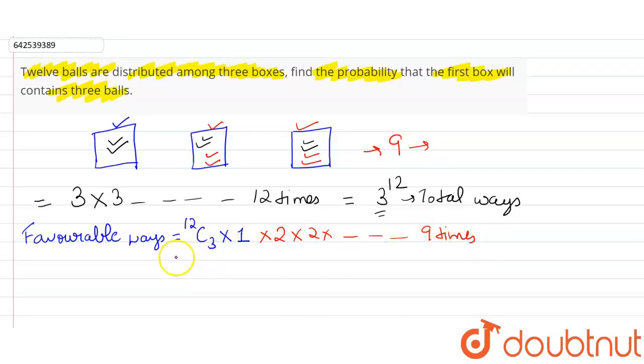So our favorable outcomes will be 12C3 into 2 to the power 9. Now the probability will be favorable outcomes, that is 12C3 into 2 to the power 9, upon total outcomes, that is 3 to the power 12. This can be written as 12C3 into 2 to the power 9 upon 3 to the power 12, which is our answer.